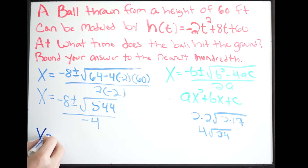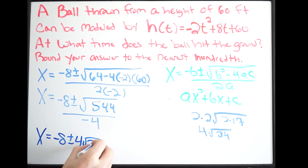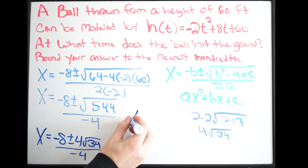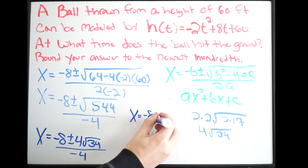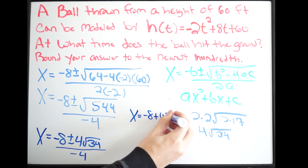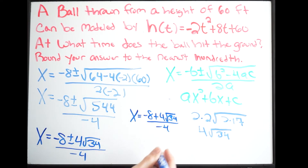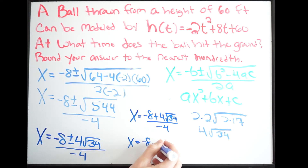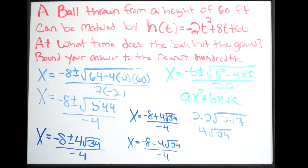Rewriting this, we get x equals negative 8 plus or minus 4 square root of 34, all over negative 4. From here we simplify to get two zeros: x equals negative 8 plus 4 square root of 34 all over negative 4, and x equals negative 8 minus 4 square root of 34 all over negative 4. Only one of them will represent our answer — we can't have a negative time, so one of these zeros is going to end up being negative and that's not going to be the answer.